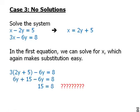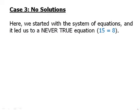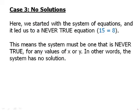Again, all the variables have dropped out, but now we have something that is patently false. It is never true that 15 equals 8. We've run into a contradiction. Here, we started with the system of equations, and it led us to a never true equation. This means that the system of equations must be never true. In other words, there's no possible values of x and y that we could pick that would allow us to say that 15 equals 8 is a true statement. So, the system does not work for any values of x, and there is no solution.